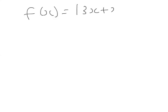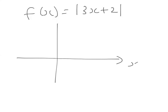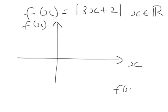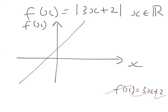Let's take the function f(x) equals mod of 3x plus 2 and think about its graph. The graph of f(x) equals 3x plus 2 without the mod signs passes through the point (0, 2) with gradient 3. But we've got the mod version. When x equals minus 2, we get minus 2 times 3 equals minus 6, and minus 6 plus 2 equals minus 4. But we're taking the positive value, so instead of being at minus 4, it's going to be at plus 4.